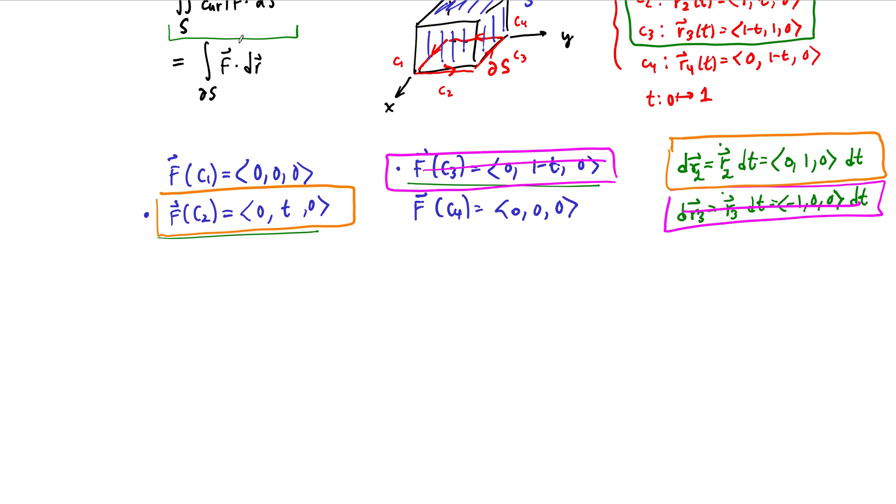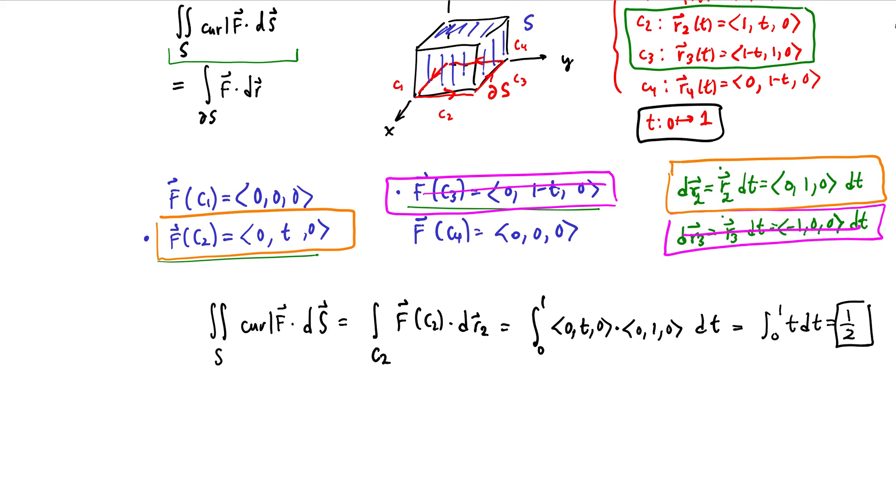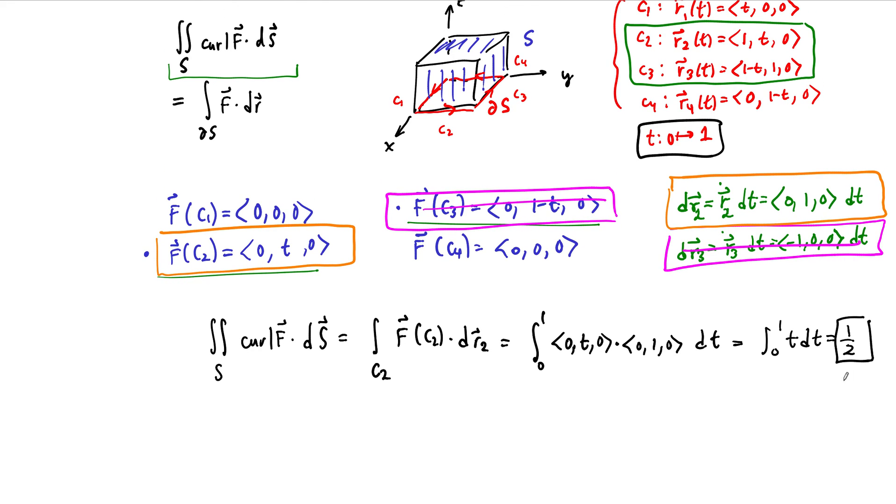By Stokes' theorem and all this work that we've done, the surface integral of the curl of this vector field dotted with ds is equal to the path integral along this portion C2 of f of C2 dotted with dr2. Our parameter domain was 0 to 1 in the t direction, and then what we have to actually integrate is 0, t, 0 dotted with 0, 1, 0, dt. But when you work this out, this is the integral from 0 to 1, t dt, and this is just a half. So the flux of this vector field across the surface of the cube that does not include the base of the cube is 1 half.